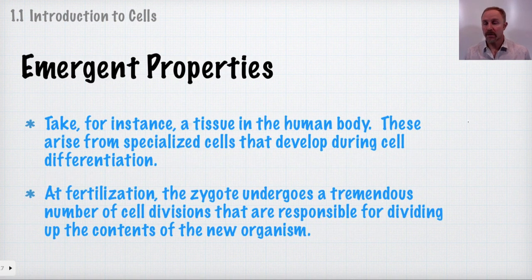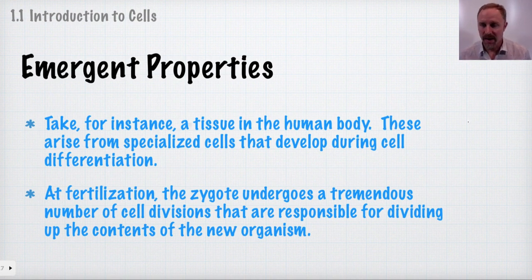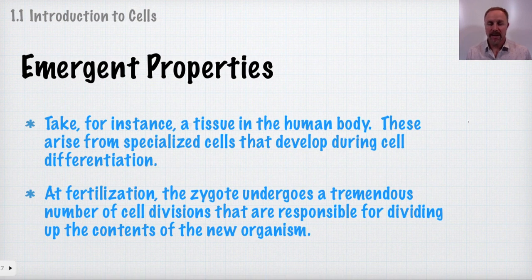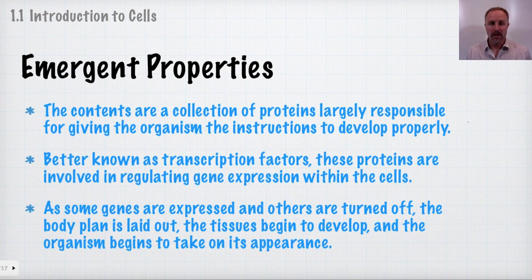Looking at a human body, you can see there are all sorts of specialized cells that develop during differentiation. At fertilization, the zygote begins to divide and the cells start to receive their instructions. A number of cell divisions take place, dividing up the contents of the new organism, and as those divisions occur, the cells start to take on the functions they're going to carry out for the rest of their lives.